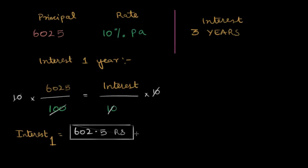That's not the question. The question is for three years. So all I have to do to calculate my interest for three years is to multiply this by three. 602.5 into three is 1807.5.